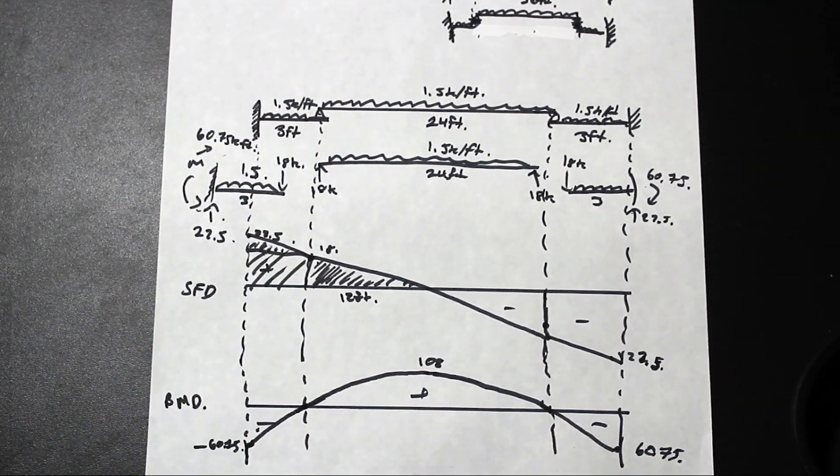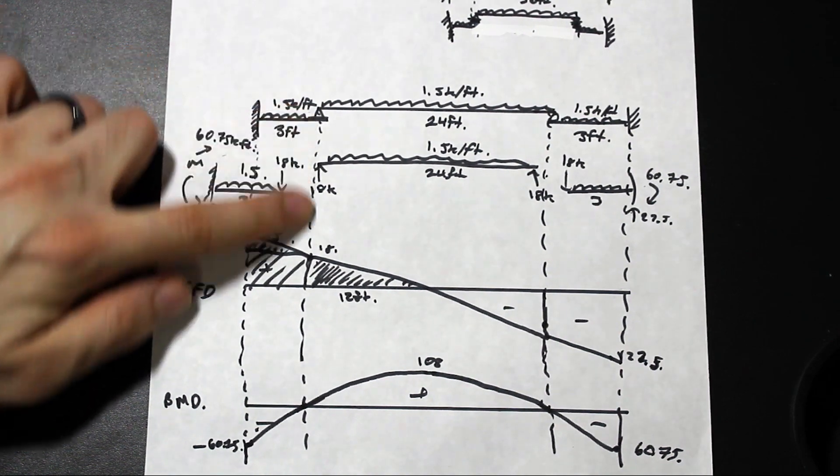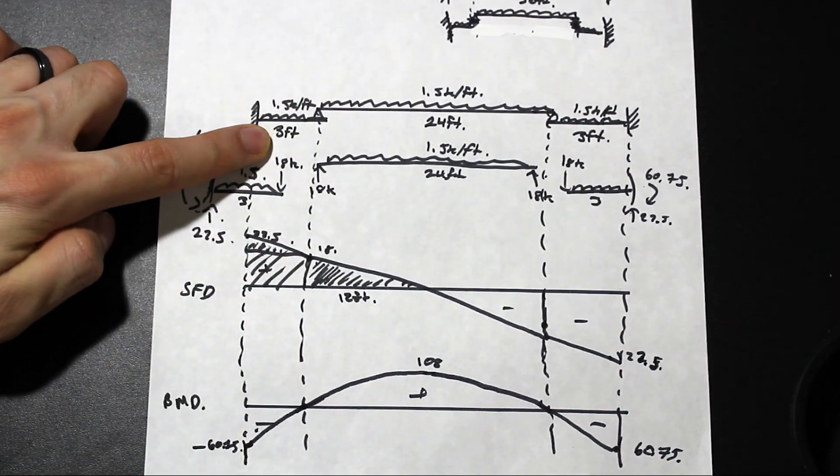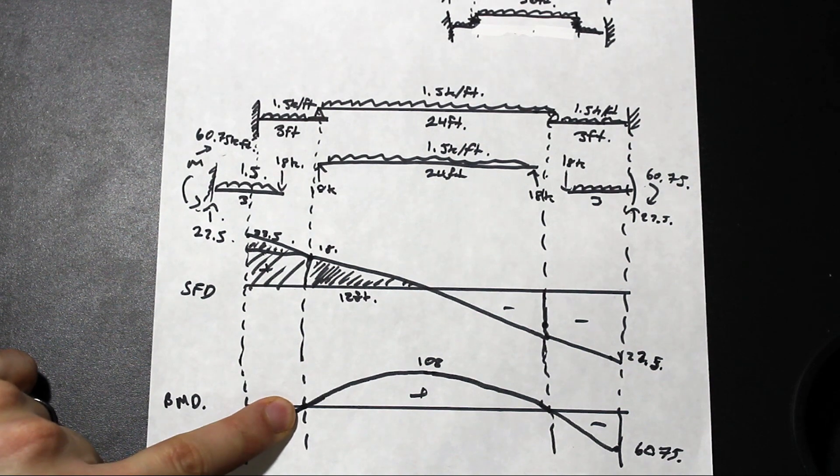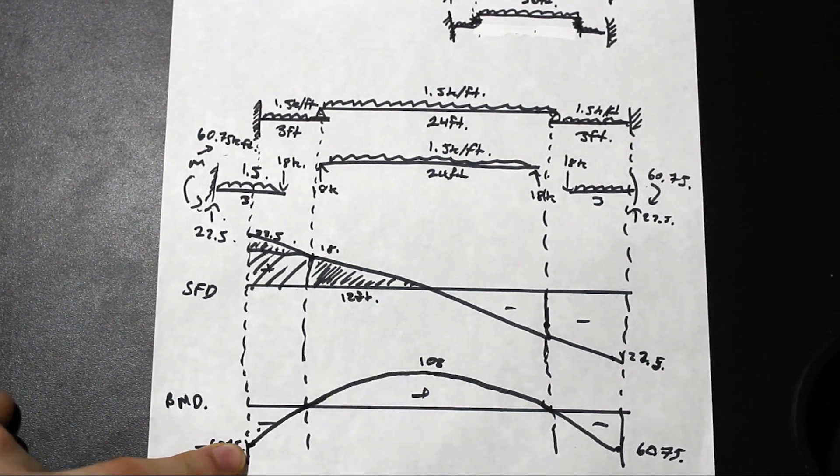And as you can see, we extended the moment down to negative 60.75 on both sides. And we made sure that we indicated that the inflection point using these dotted lines, which is 3 feet from the face of the fixed support, is where our moment changes from positive to negative, right?